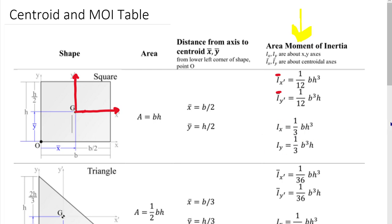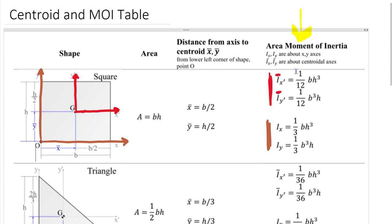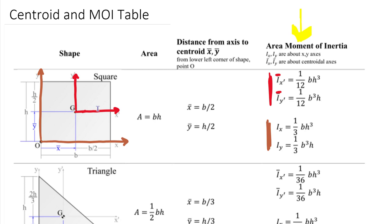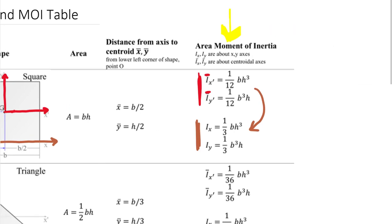The other set of equations is about the bottom and left edges. One-twelfth is smaller than one-third, while the other terms — bh³ and b³h — are the same. Fundamentally, the moment of inertia of any shape about its own centroid is smaller than the moment of inertia about any other axis. As we move away from the centroid, we get a bigger and bigger moment of inertia. The method to go from centroidal equations to edge-axis equations is called the parallel axis theorem.